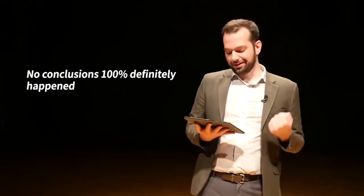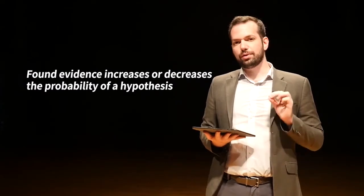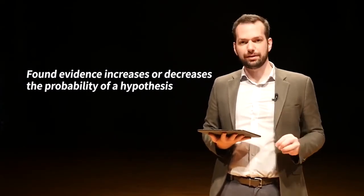No conclusions definitely 100% happen. We cannot say anything definitely happened - it's either supported or it's not supported. Found evidence increases or decreases the probability of a hypothesis being true. We have to find enough evidence to make the probability of one hypothesis much greater than the others. The normal standard in court is that we accept it beyond a reasonable doubt. If there is another explanation, the suspect would probably be found innocent.